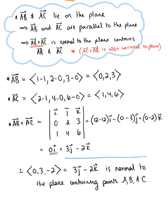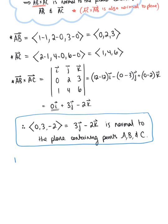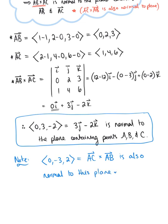This is our final answer. And again, remember that this is not an exclusive solution. We can also make a little note here to ourselves and say that the vector 0, minus 3, positive 2, which of course is the cross product of vector AC and vector AB, is also normal to this plane. Either answer is correct.